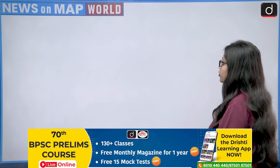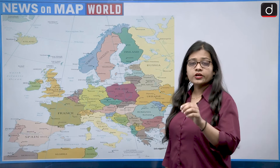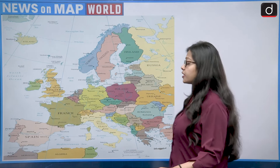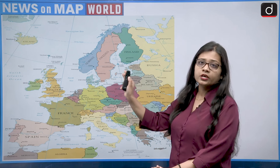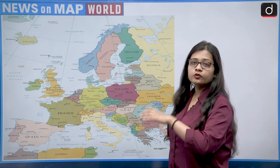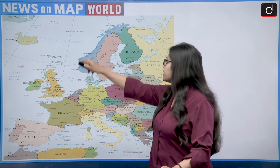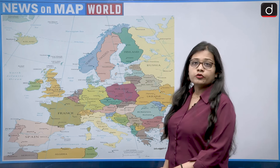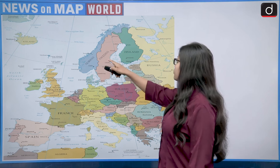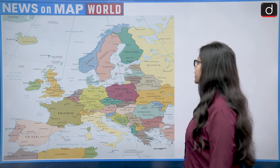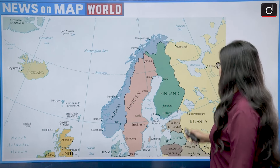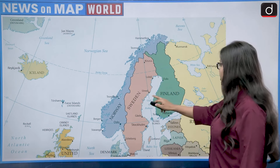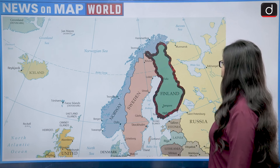The clue that Sweden lies to the west tells us this is a Scandinavian country. Looking at the map of Europe: Finland has Russia on its east side, Sweden on its west side, and the Gulf of Bothnia lies between Sweden and Finland. Finland is also the most densely forested country in Europe.